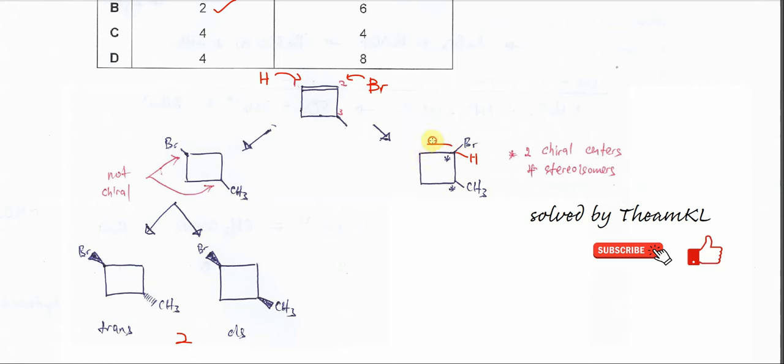From this side, it's CH2, CH2, CH3. From this side, it's CH3, CH2, CH2. So it's different sequence, it's a different group. So we know that these two carbons are chiral carbons.